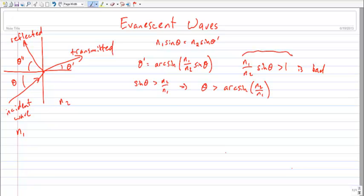Note that it's only possible for n1 over n2 sin theta to be greater than 1 if n1 is greater than n2. So you have to be going from some material of greater index to some material of lesser index, for example, from glass to air. If you're in air traveling to glass, this can't happen. You always get a solution and everything's great.